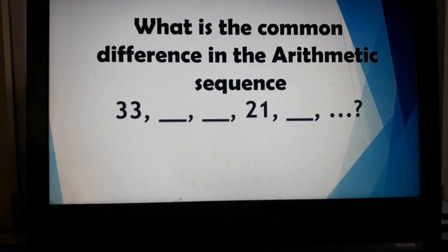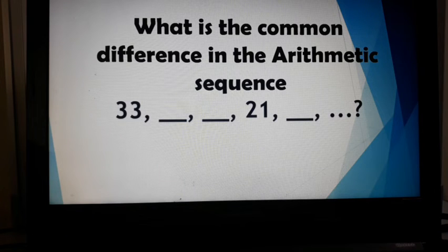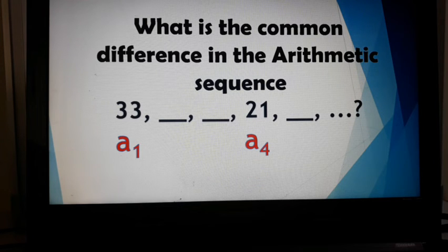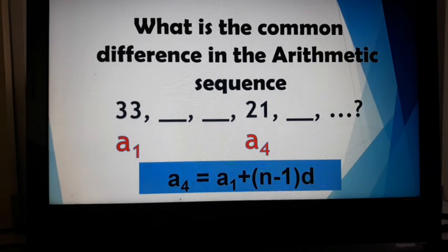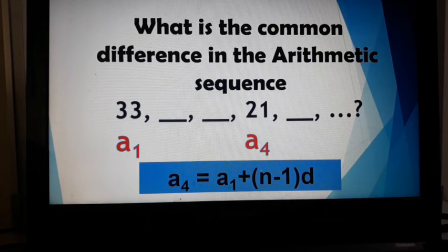Next problem. What is the common difference in the arithmetic sequence 33, blank, blank, 21, blank? Notice that we only have a sub 1 and a sub 4 in our given arithmetic sequence. So our formula will change. We have a sub 4, this is our last term, is equal to a sub 1, that's our first term, plus n minus 1 times d.